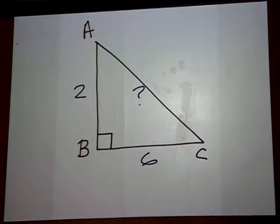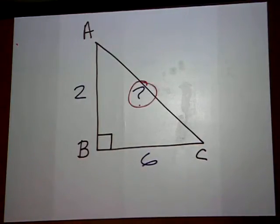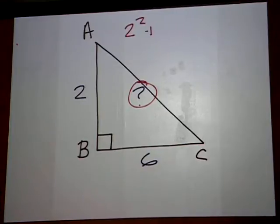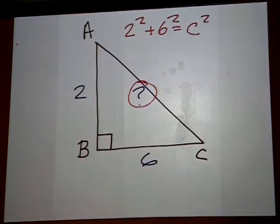To solve for the missing side, which is the hypotenuse, we want to square 2 and then square 6, and set it equal to c squared.